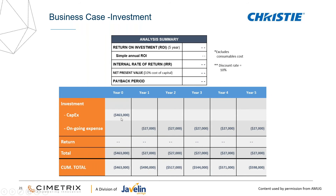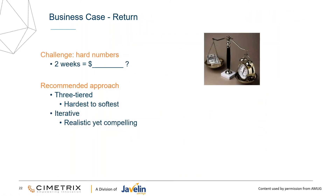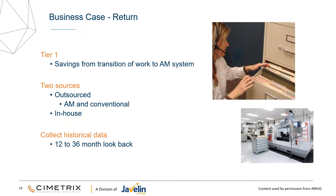So we basically plug that into a spreadsheet — your capital number and then your ongoing expenses, assuming those expenses are the same year over year, though you may need to account for inflation depending on what your company requires. Then we start getting into what's the return. We recommend doing a three-tier approach going from your hardest, most easily justified things down to the softest. The first tier is where it's easy to justify — look at what you're saving. What are you doing now that you're going to convert? If we're talking additive manufacturing, what am I sending out to a service bureau? Pull those invoices with your finance team and get that data.